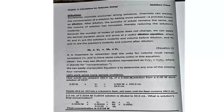Note: the dilution equation is also presented as C1V1 = C2V2, where C stands for concentration. We can easily manipulate this equation to determine any one of the four missing variables.